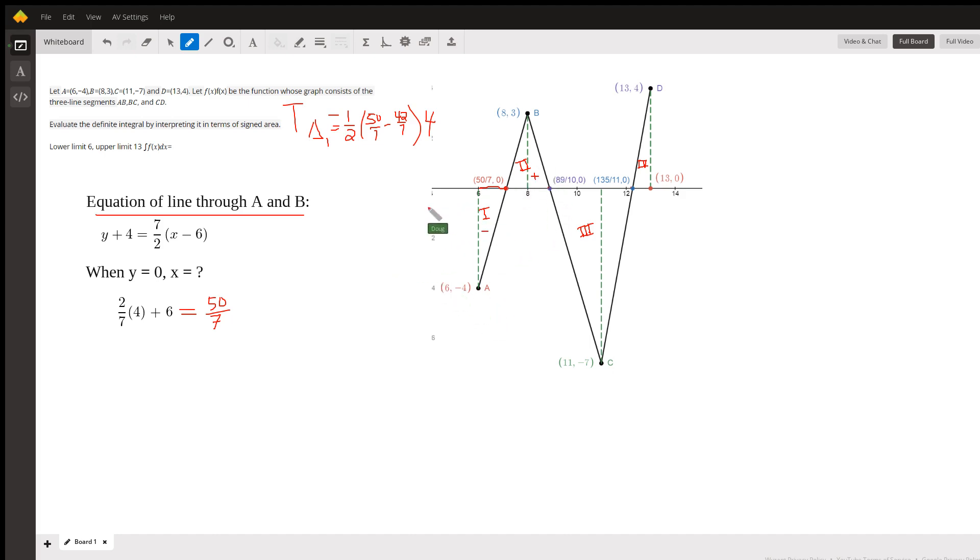Okay. I'll let you take it from there. Here we can see that this would be negative 1/2 times 4 times 8/7. So it would be negative 2 times 8/7, or negative 16/7.